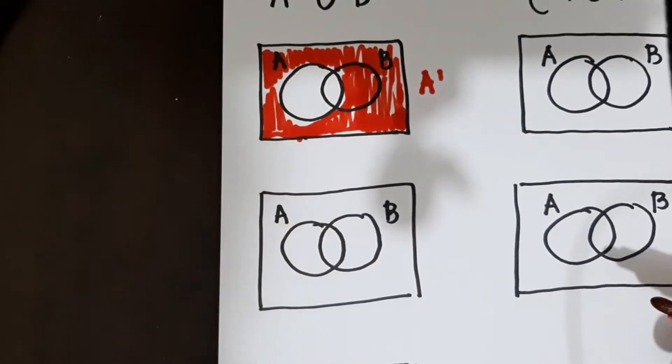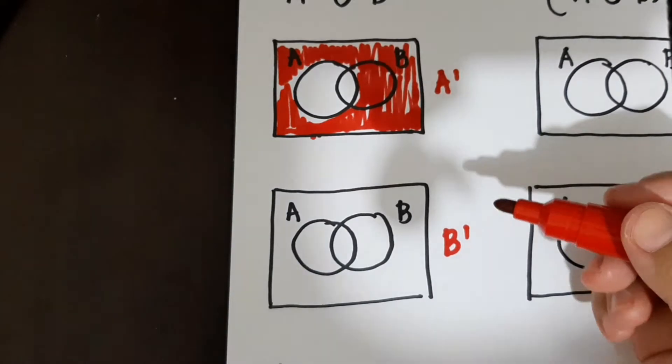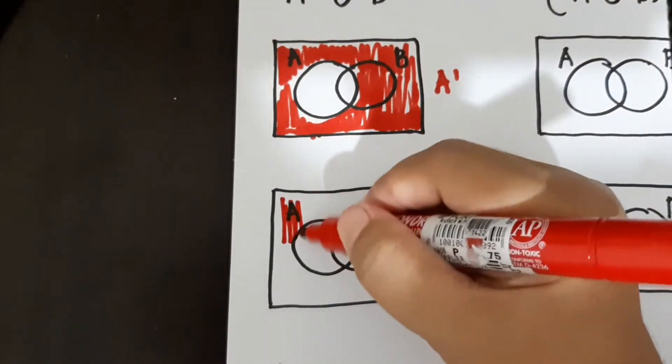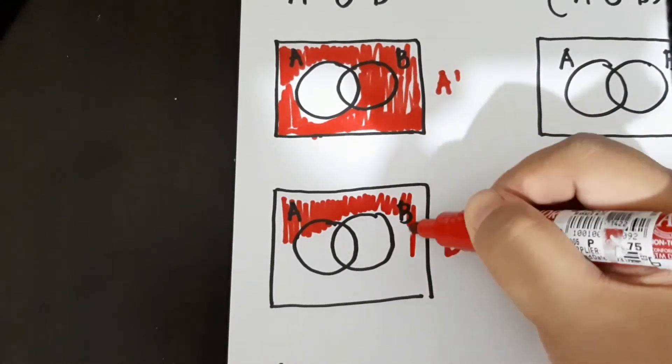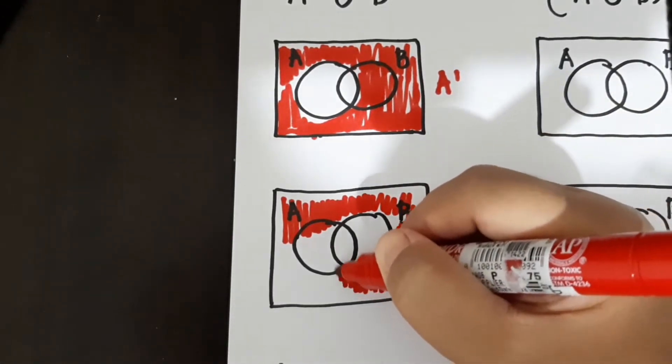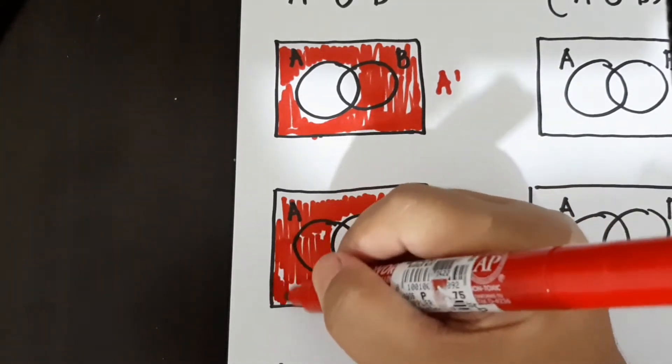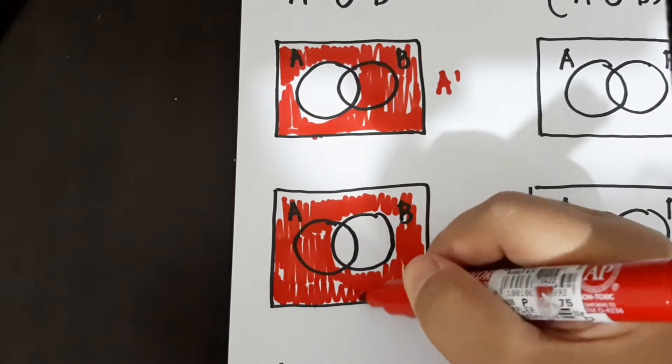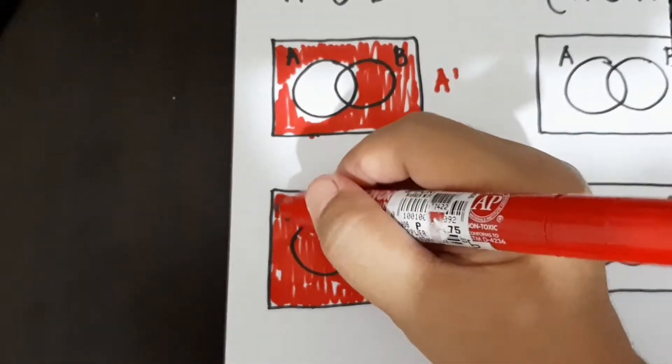Next is not B. So this would be not B. So we have shade sa labas naman ng B. Medyo matagal magshade.